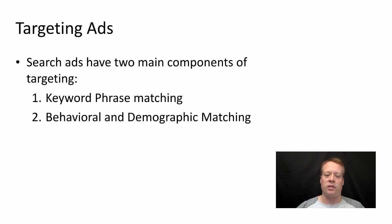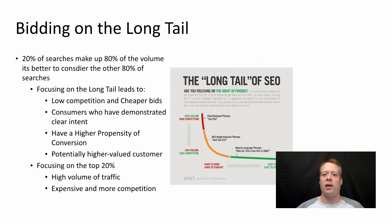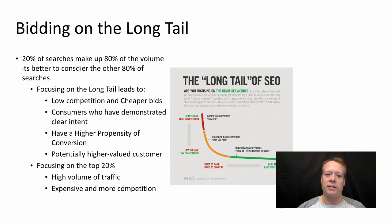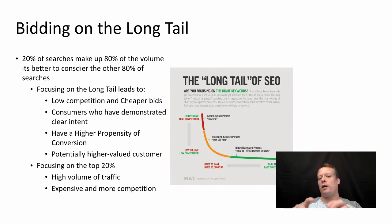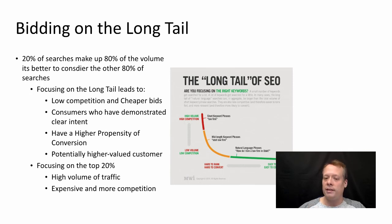So let's talk about keyword phrase matching first. You need to think carefully about the keyword phrases you should use. This is similar to the process of search engine optimization. Especially when you're advertising, it makes a lot of sense to bid on what we call the long tail. 20% of searches make up about 80% of the value, and it's much more in your interest to consider the other 80% of searches. If you can pick and choose from those other searches, you can actually add up to more than what's in that top 20%. Focusing on the long tail leads to low competition — fewer people are competing in this longer tail.